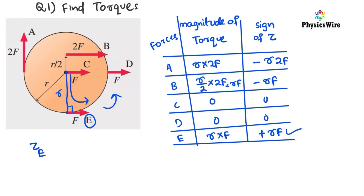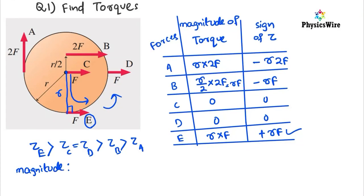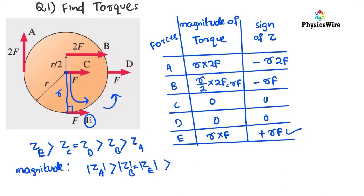Arranging the torques: torque E is positive so it is the greatest. Torque C and torque D have values of zero. Then comes torque B, then torque A. Considering magnitudes, torque A has the largest magnitude, then torque B and torque E which have the same magnitude, and torque C and torque D have zero magnitude.